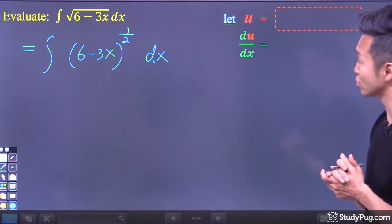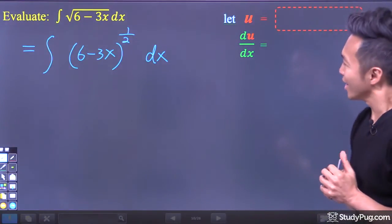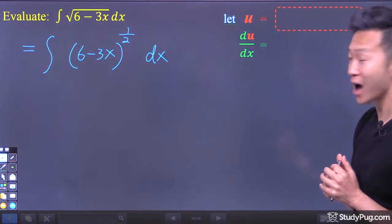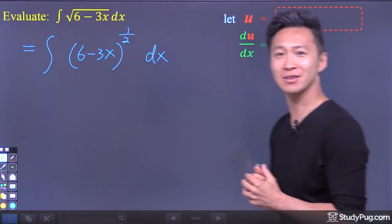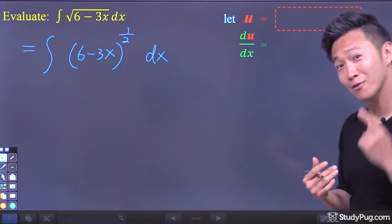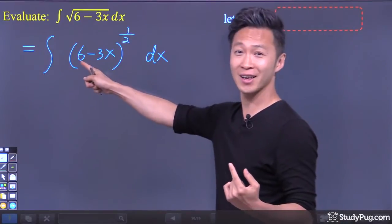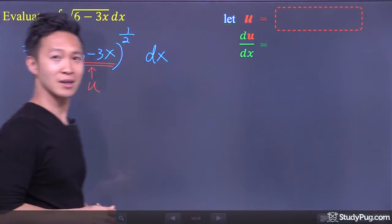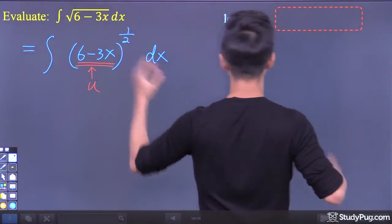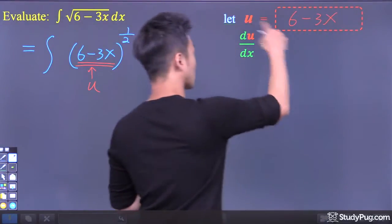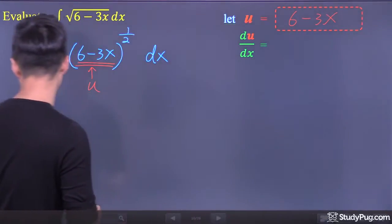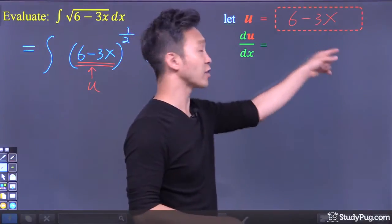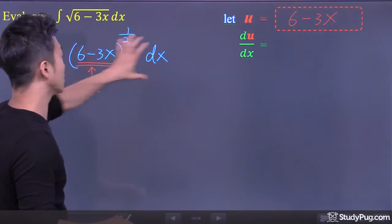Now I think we're ready to do u-substitution. In this case, the choice for u is quite obvious — we pretty much just have one choice for u. So let's make u equal to 6 minus 3x and see what the differential equation gives us.